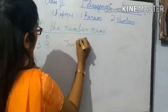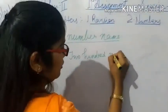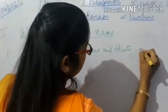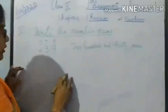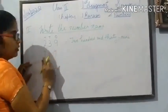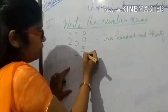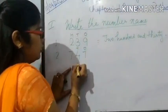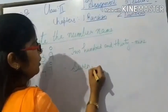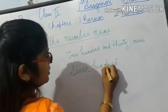So the number name of 239 is two hundred and thirty-nine. Next, the second number is 747. 7 is in the 1's place, 4 is in the 10's place, and 7 is in the 100's place — so the number name is seven hundred and forty-seven.